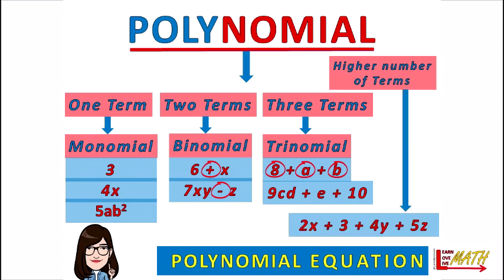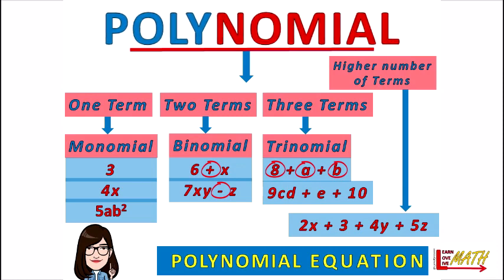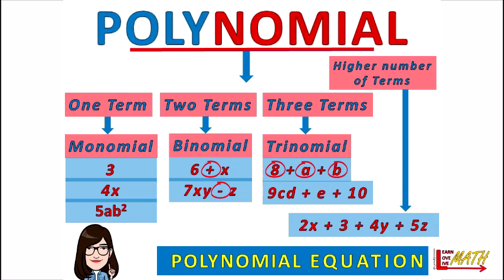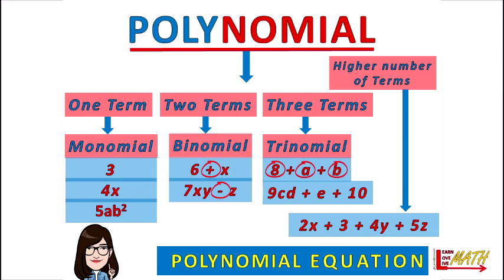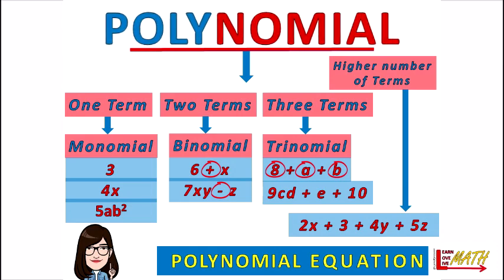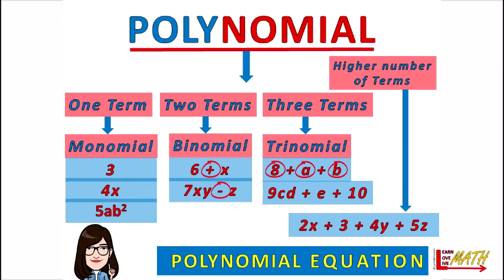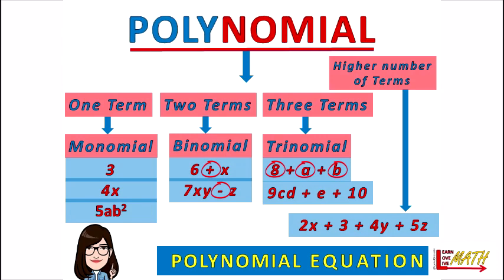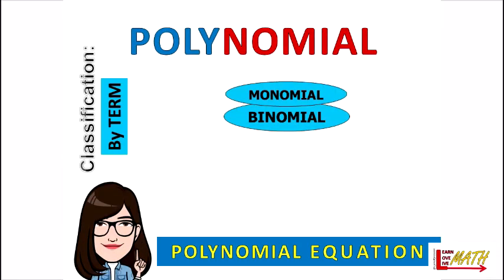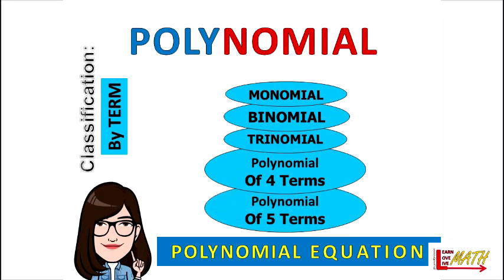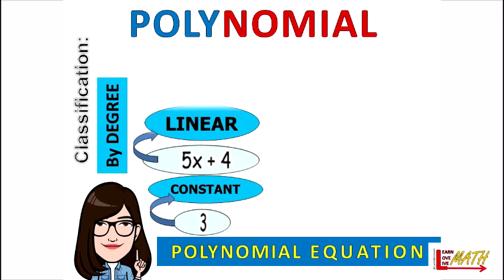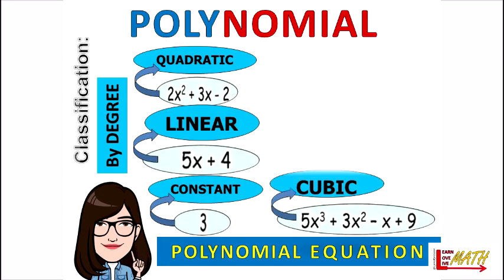An example of an expression with four terms is two x plus three plus four y plus five z. Remember, a polynomial is an expression that has one or more terms. There are a lot of things you should know about polynomials — it has classifications by terms and by its degree — but we will now move on to how we can use polynomial equations in real-life situations.